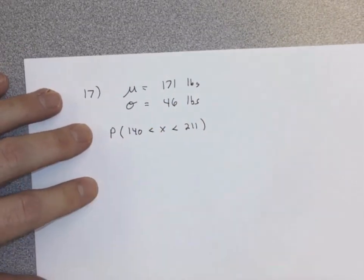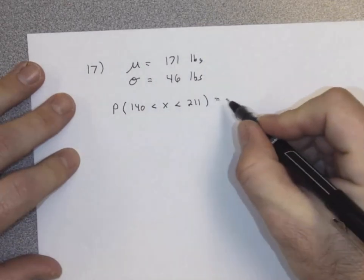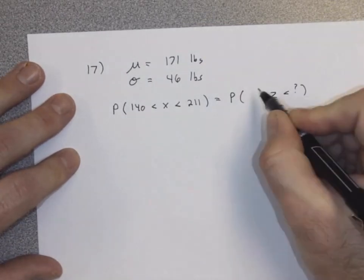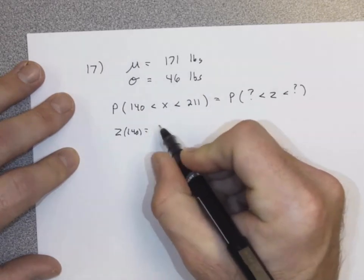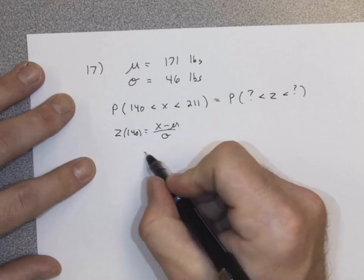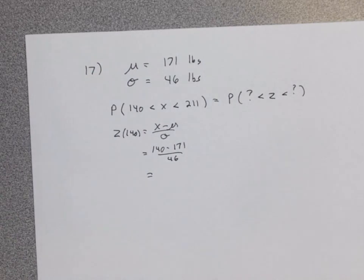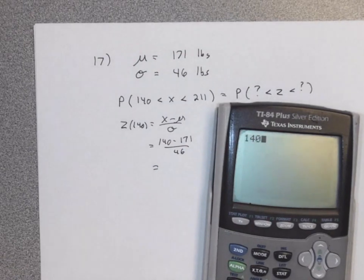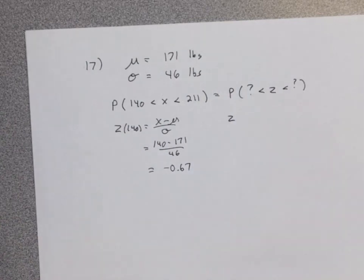Part A: if one woman is randomly selected, find the probability her weight is between 140 and 211 pounds. This is just like a 6.2 problem — find the Z-score. Mean is 171, standard deviation is 46. Z for 140 equals 140 minus 171 divided by 46, which equals negative 0.67. Z-scores are rounded to the hundredths place because our table is to the hundredths.